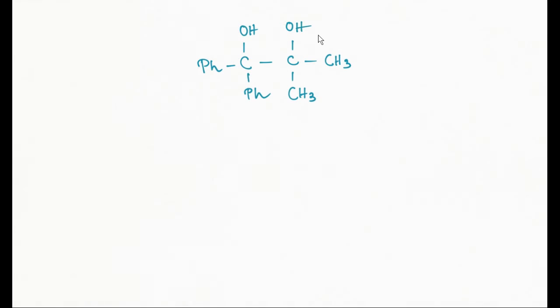Next example. In this case, if protonation occurs on this side, the carbocation is stabilized by two methyl groups. But protonation on this side generates a carbocation which is stabilized by two phenyl groups.